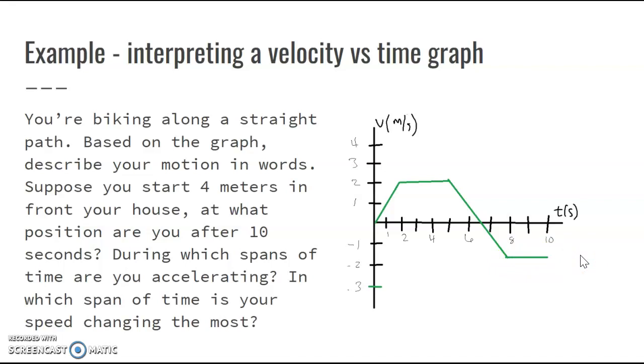In which span of time is your speed changing the most? Our speed is going to be changing the most when the slope of our graph is the steepest. And looking here, our graph has the steepest slope. Let's see. Well, in this first region, we go up two units and over two units. Whereas in this slope over here, we go down four units and over one to three units. So this region here, we actually have the greatest change in speed because the magnitude of the acceleration is larger in this region than this region over here. So I hope that was helpful in kind of interpreting a velocity versus time graph. And thanks for watching.